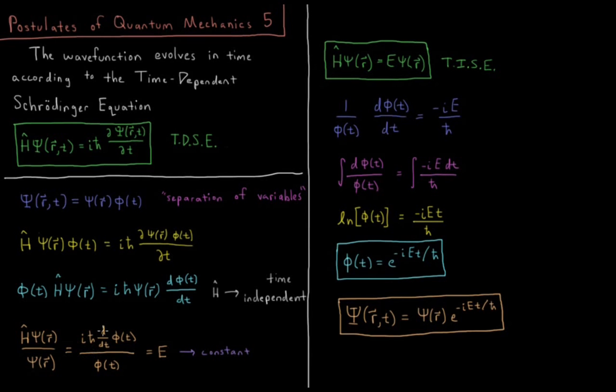What about our other part? We have d dt phi of t times I h-bar over phi of t equals E. So we can do some algebraic rearrangement there, multiply everything times phi of t, divide by I h-bar, or equivalently multiply times minus I over h-bar. We get 1 over phi of t times d phi dt equals negative IE over h-bar.